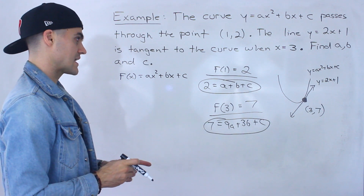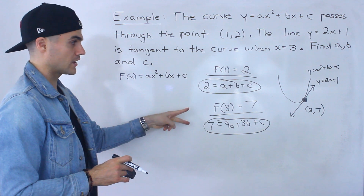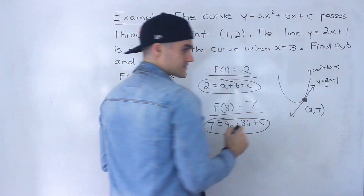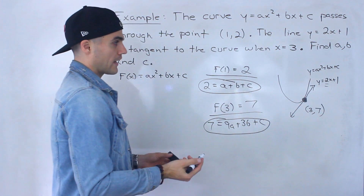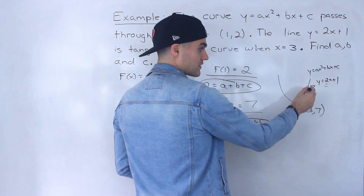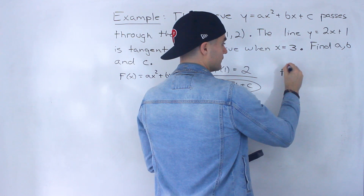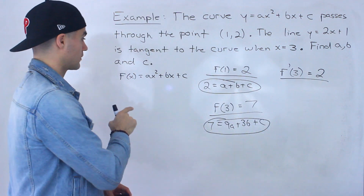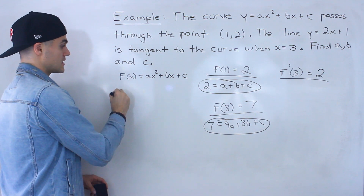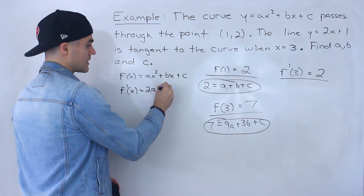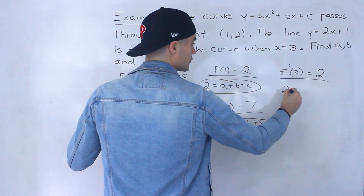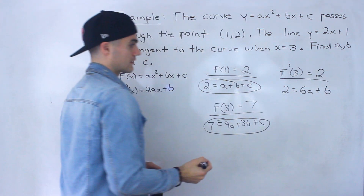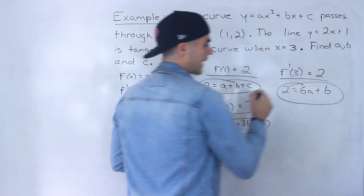We have two equations but three unknowns — we need a third equation. Notice that we know the slope of the tangent at x equals 3 is 2. So f prime of 3 equals 2. We take the derivative of f of x equals ax squared plus bx plus c to get f prime of x equals 2ax plus b. Plugging in x equals 3 gives us the third equation: 6a plus b equals 2.